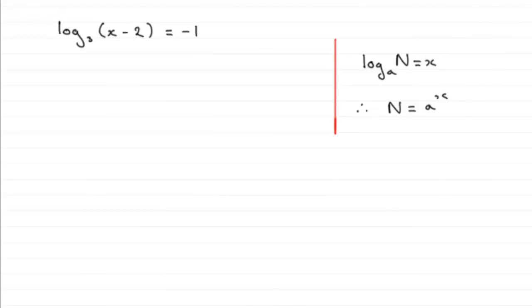So all we need to do is just apply that here, because if we anti-log this, this is our N value. So therefore x minus 2 equals the base, which is 3, raised to the power minus 1.